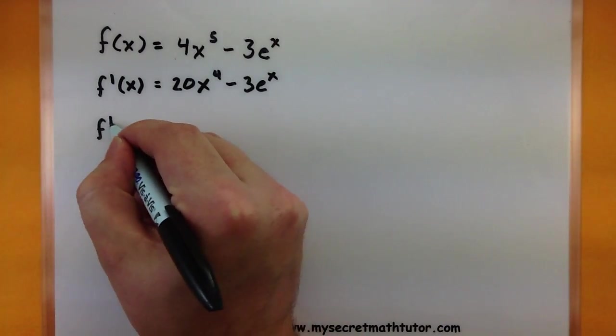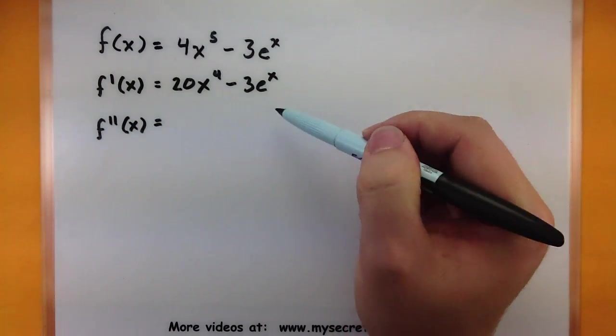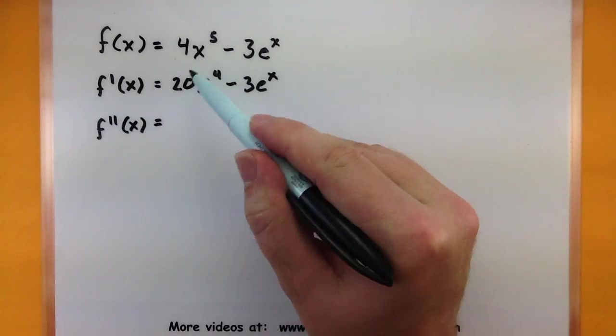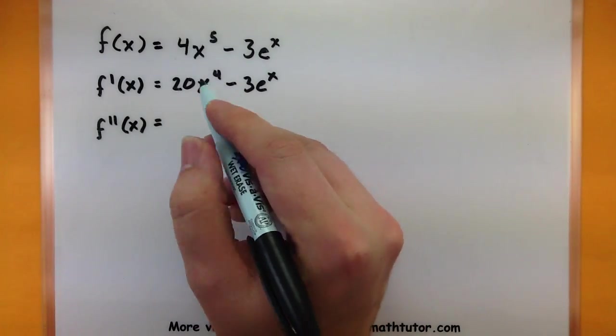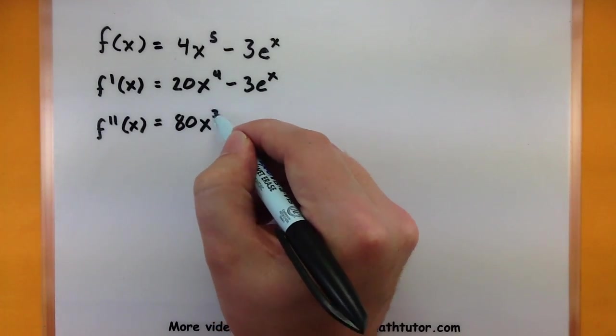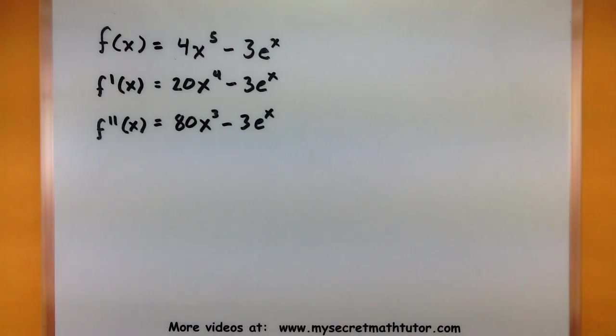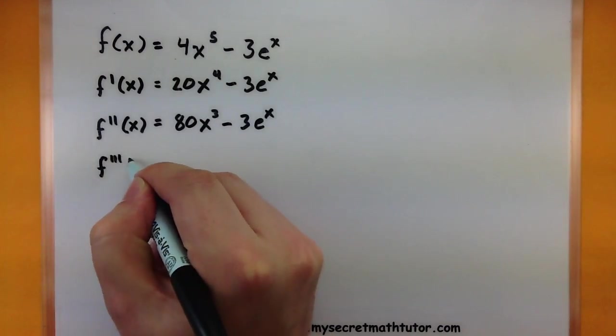But why stop there? Let's find another derivative. This would be the second derivative or the derivative of this one. So just like before we bring down the power again. So now we're at 80x cubed minus 3e to the x.